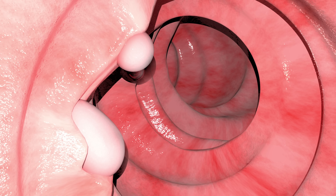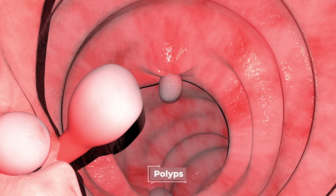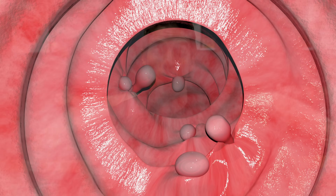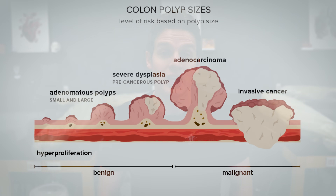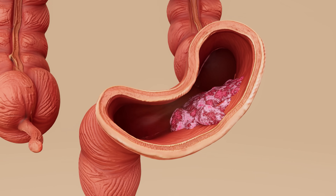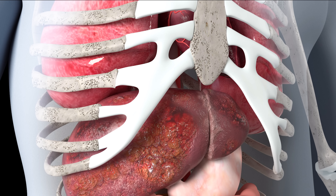Colon cancer usually starts in this inner lining. Most cases begin when initial genetic mutations trigger abnormal cell growth in the colon's epithelial cells, leading to the formation of small non-cancerous growths called polyps — like little mushroom-like bumps on the colon wall. Not all polyps turn cancerous, but certain types like adenomatous polyps have the potential to progress if additional mutations accumulate over time. These mutations mess with the normal cell cycle, and cells start growing out of control, ignoring signals to stop or die off. The cancer can then invade deeper layers, spread to nearby lymph nodes, and eventually metastasize to distant organs like the liver or lungs.